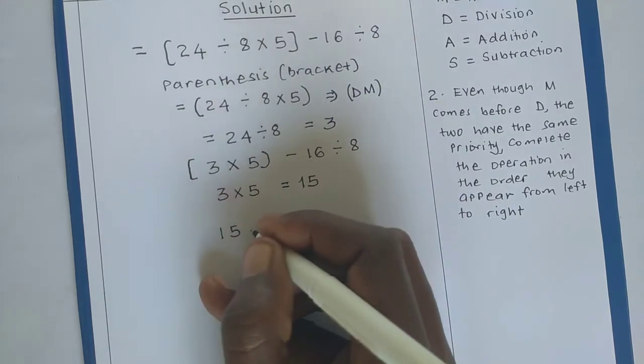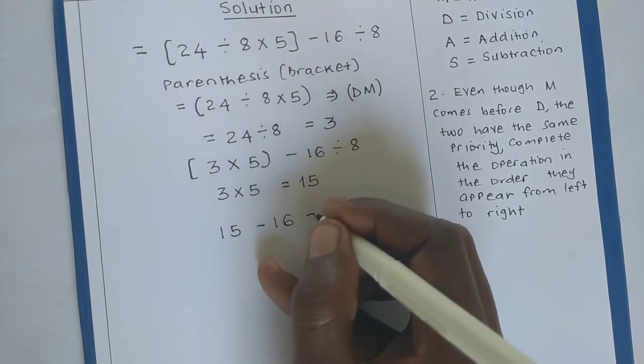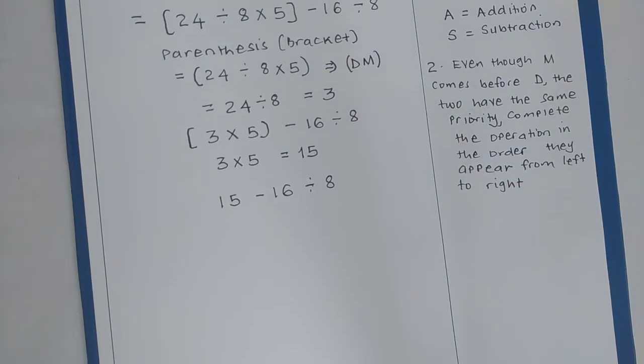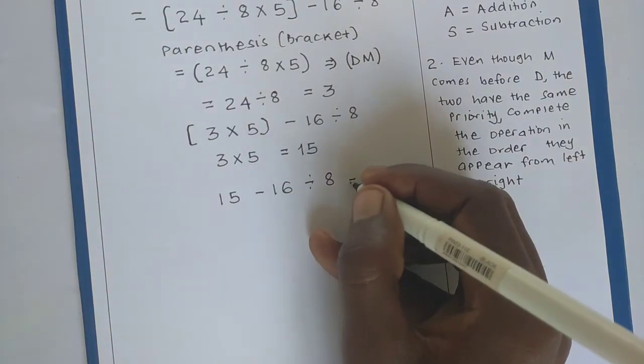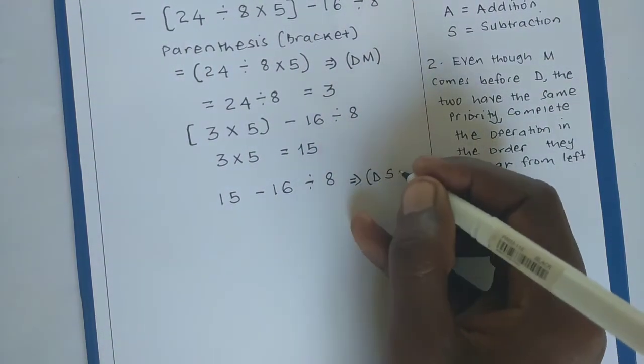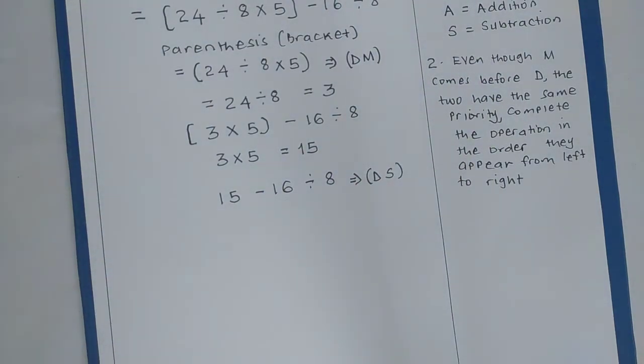we now have 15 - 16 ÷ 8. From our PEMDAS, we know that we are going to do division, then subtract. We have division, we first divide and then subtract.